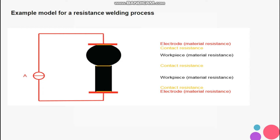Resistance spot welding is a joining process whereby electrode-conducting components are melted in the joining zone using Joule heating. The firmly bounded joint is generated due to the solidification of base material. This process is supported by external force and diffusion processes.